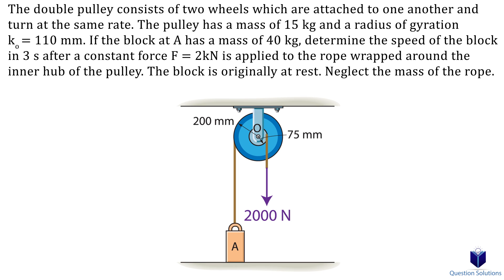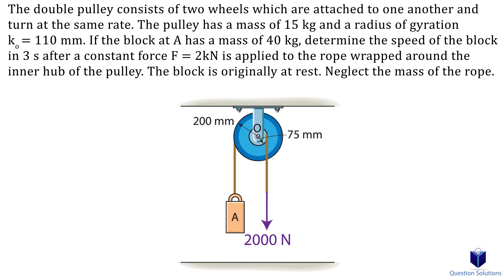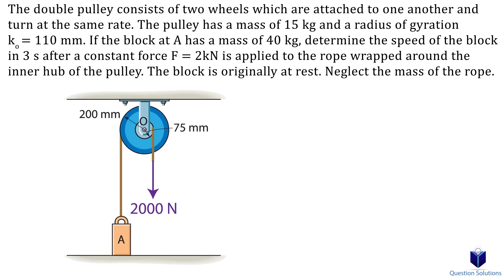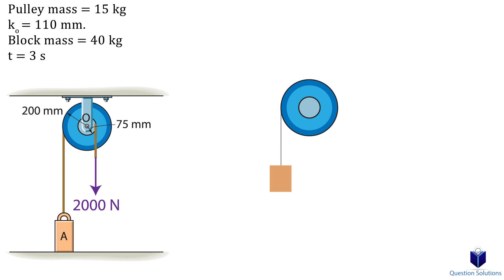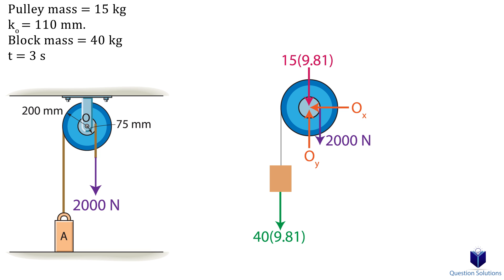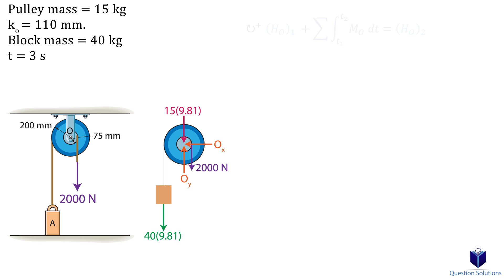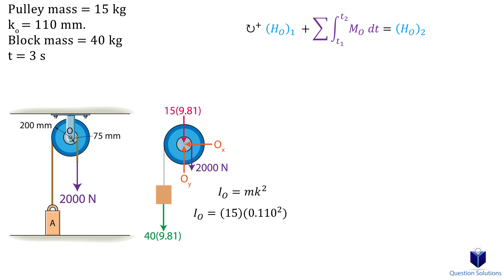Let's take a look at this problem, where we have two pulleys attached to each other. When the cord is pulled for 3 seconds with a force of 2000 newtons, we have to figure out the speed of the block. Drawing a free body diagram of the pulleys, we have the reactions at pin O, the weight of the pulley, the 2000 newton force, and the weight of the block pulling downwards. The mass moment of inertia for the pulley uses mass 15 kg and radius of gyration 0.110 meters.